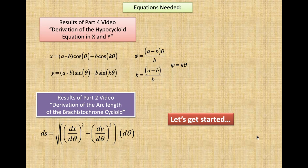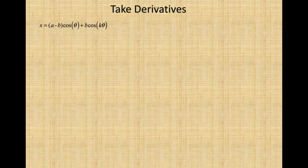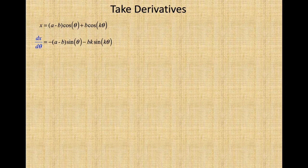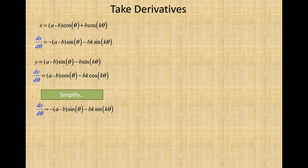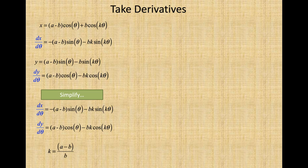Okay, let's get started. Let's take the derivatives. Here is x — take the derivative of x with respect to theta. And here is y — take the derivative of y with respect to theta. We simplify dx/dθ and dy/dθ. We know that k is equal to a minus b divided by b, so bk is equal to a minus b.